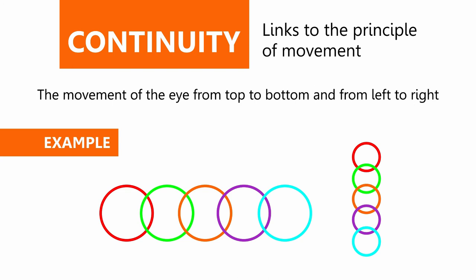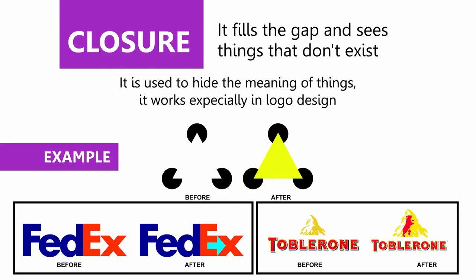The last law is closure. It fills the gap and sees things that don't exist. For example, this image - you think you are seeing a triangle, but it is circles cut out and facing each other. Look at the FedEx logo, it seems as if there is an arrow here.